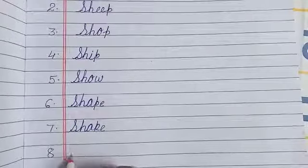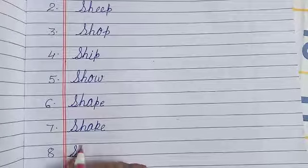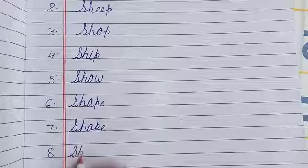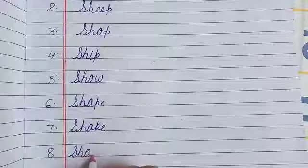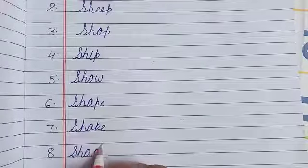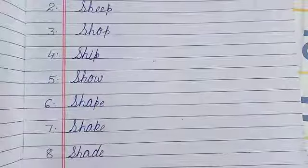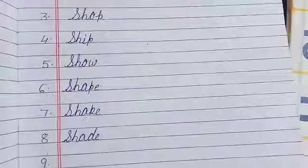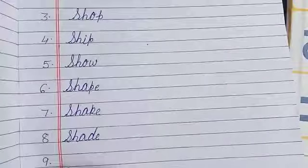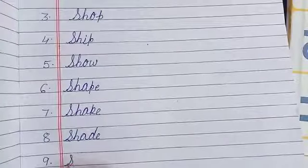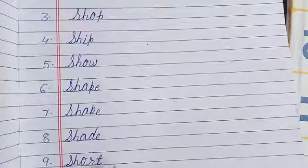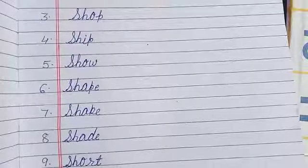Next, S, H, A, D, E — shade. Next, S, H, O, R, T — short.